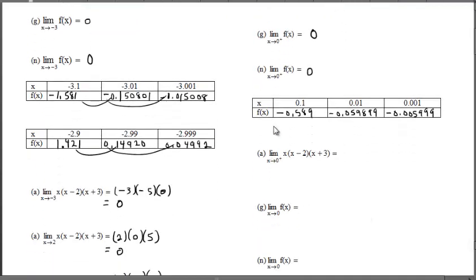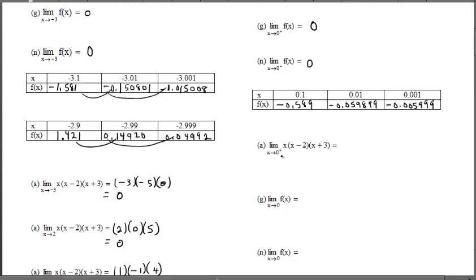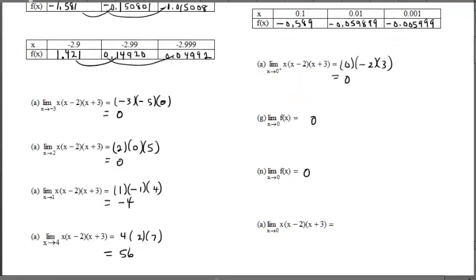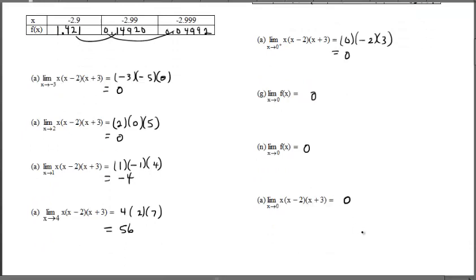Analytically, as x approaches 0 from the right, don't plug in an uncomfortable nearby number unless you have to. Plugging in 0 gives 0, which is a nice answer, so we're done. For the two-sided limit as x approaches 0 without a superscript, we always try plugging in 0 first. We saw in both previous analytical questions the result was 0. That's a quick review of left-hand limits, right-hand limits, and putting it all together.